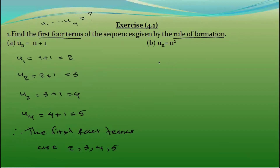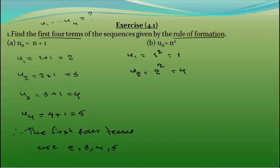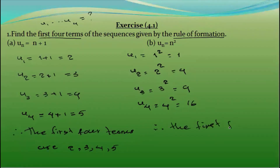The first one: U1 = 1 squared = 1. U2 = 2 squared = 4. U3 = 3 squared = 9. U4 = 4 squared = 16. So we need to find the first four terms: 1, 4, 9, 16.